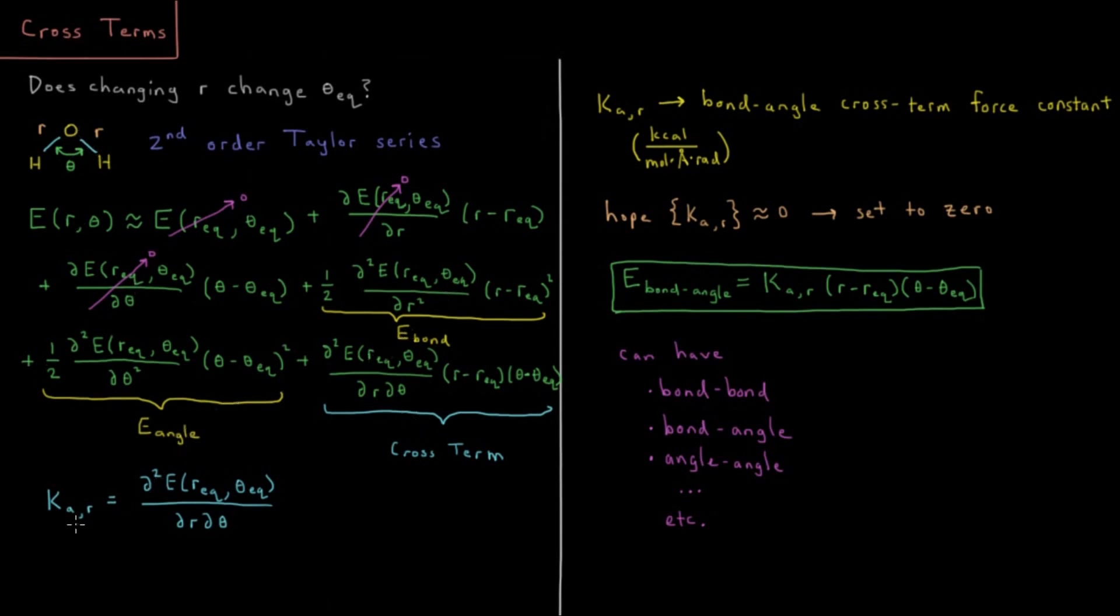So we could define this term, this derivative here, just as we did for the bond spring constant and the angle spring constant. We could call this a bond angle cross term force constant, spring constant, whichever you prefer. So we have this cross term spring constant here, that would be in units of kilocalories per mole times angstroms times radians, most typically. So energy per unit distance per unit angle.